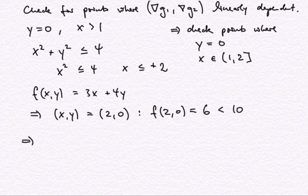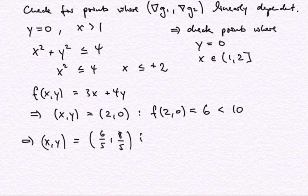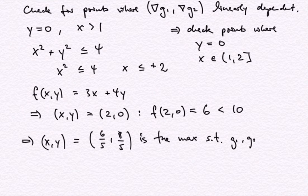We can therefore conclude that the pair (6/5, 8/5) is indeed the maximum of the objective function subject to the given constraints. End of example one.